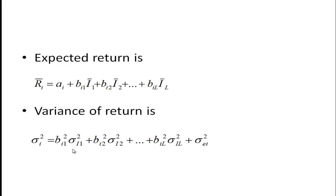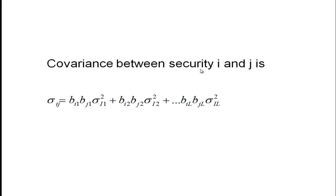The covariance between security i and security j is again very similar, except we have more terms. In the single index model it would just be bi1 times bj1 times the index variance, but here we have to add in the relationship to the second index, plus the relationship to the third index, and so on. If we had only one index, all of the other terms would disappear, and this would look exactly like our single index model.